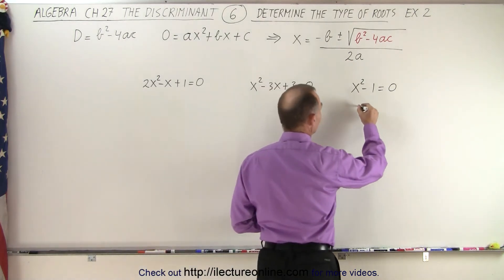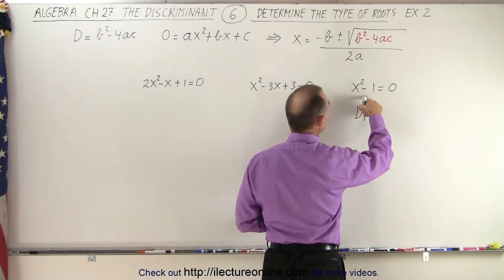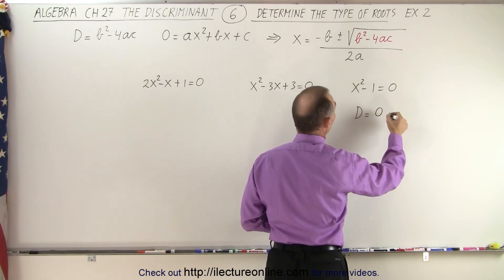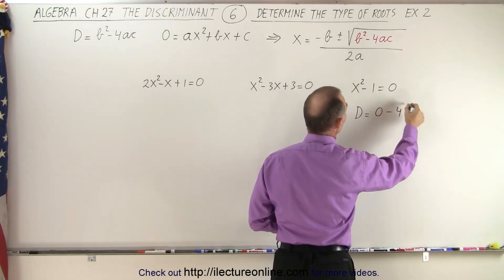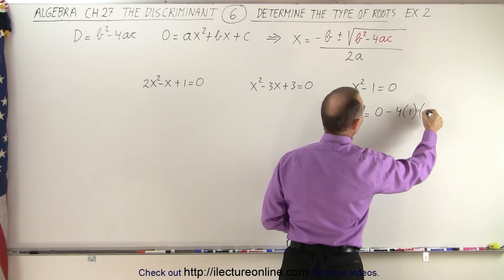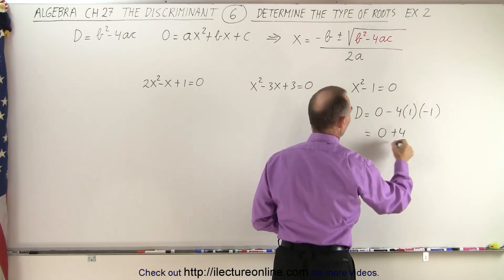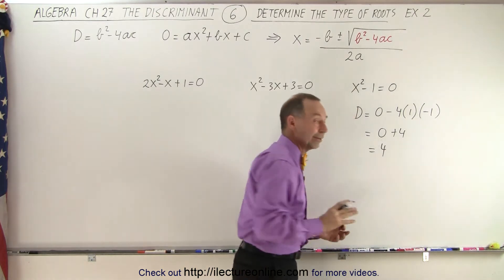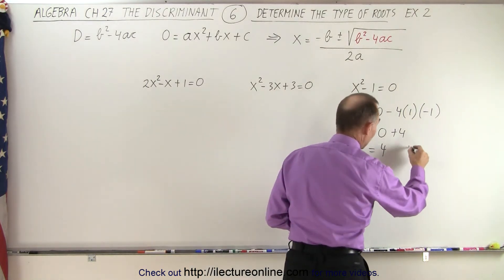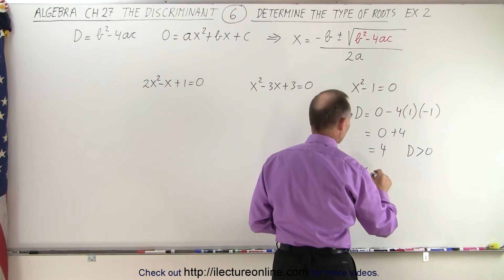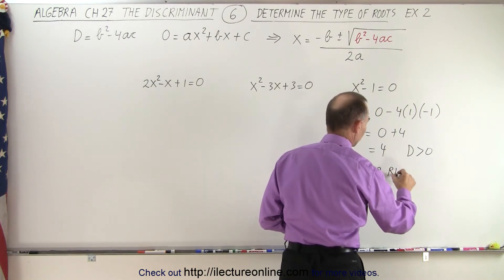So in this case the discriminant is equal to b squared, but there's no b here so that would be zero, minus 4 times a which is 1, times c is a negative 1. So this becomes 0 plus 4 which is equal to 4. Here we can see that d is greater than 0, so therefore we can conclude there are two real solutions.